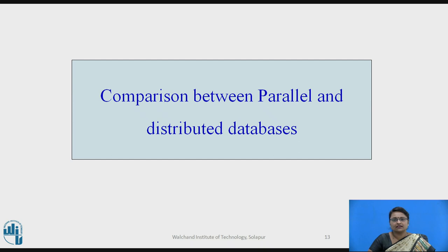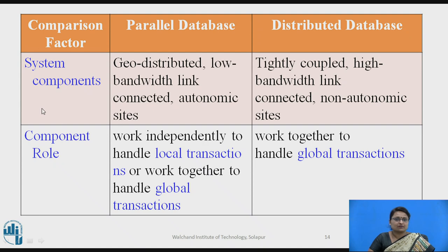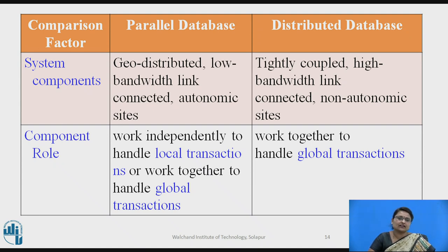Now let's look at the comparison between parallel and distributed databases based on various factors. The first factor is system components. In a parallel database, sites are geo-distributed with a low bandwidth link within a single premises, so autonomy of the site is present. In a distributed database, there is a high bandwidth link and sites are non-autonomous. For the second factor — components — in a parallel database the nodes work independently on local transactions and together on global transactions, whereas in a distributed database they work together for global transactions.